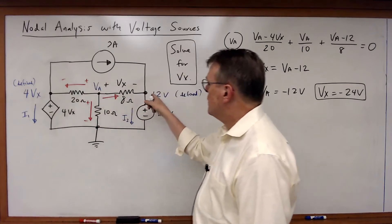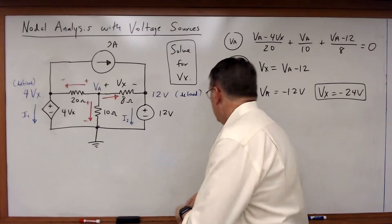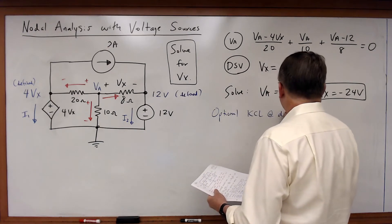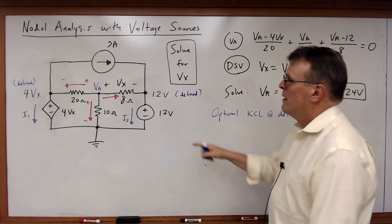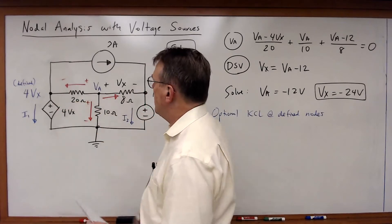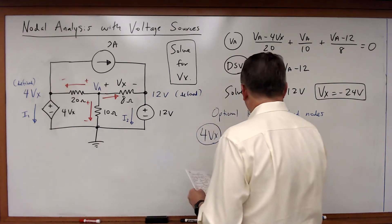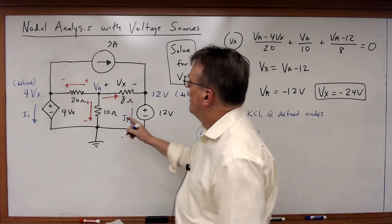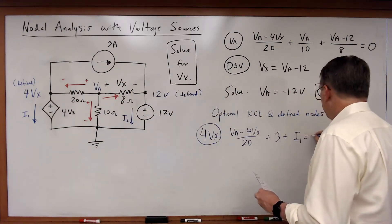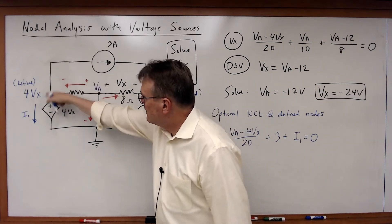Now you note I did not need a KCL equation for those two defined nodes, but could I write one? Sure, absolutely. Let's write a couple of optional KCL equations at defined nodes. So for the 4Vx node I've got that (VA - 4Vx)/20 + 3 + I1 = 0. So here I now finally use that 3 amp source because I defined it at this node. That current must be equal to that plus that.